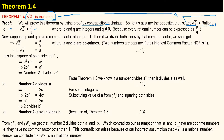Now suppose p and q have a common factor other than 1. If we divide both sides by that common factor, we get square root of 2 is equal to a by b, where a and b are co-primes — meaning there is no common factor among these two numbers other than 1, or in other words, the highest common factor of both numbers is 1.